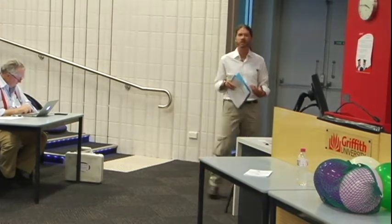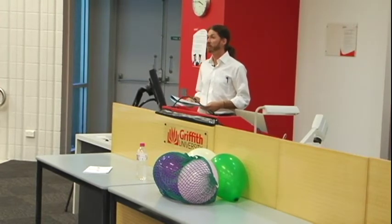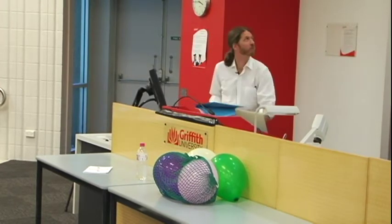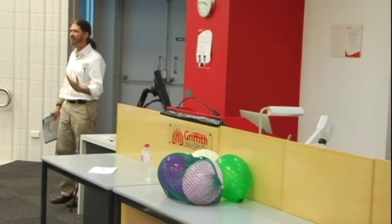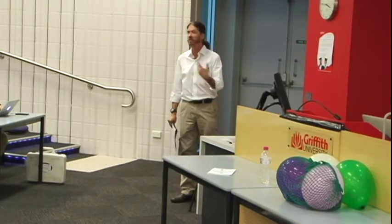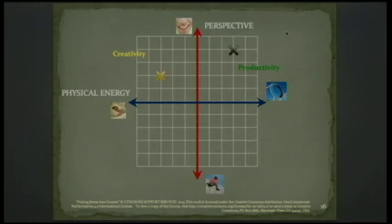Where you find yourself on the grid gives you some information about what you can expect of yourself and what your system may need to function. If you're in that top left quadrant, it's a great space if you need to be creative. You don't have to get anything done, but you can brainstorm ideas — you've got lots of space and the right headspace to come up with possibilities. And in the top right space, if your perspective is high and your energy is high, this is your productivity space. You've found something you want to do and you've got the energy to get it done.